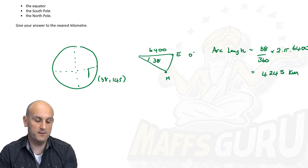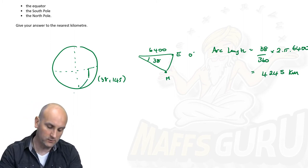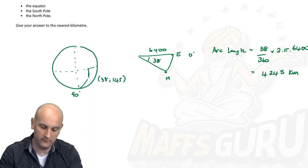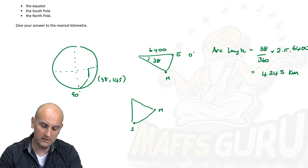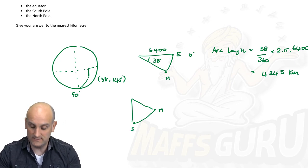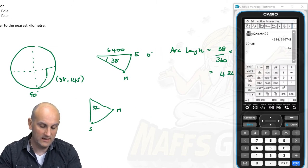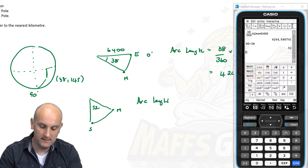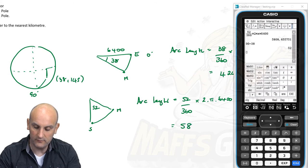Now find the distance between Melbourne and the South Pole. We're 38 degrees down from the equator and need to reach 90 degrees south, so the angle is 90 minus 38 equals 52 degrees. The arc length is 52 over 360 times 2 times pi times 6,400. Changing the value to 52 gives 5,808 kilometres.